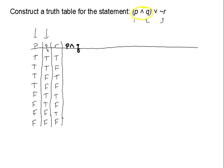So here we go. True and true gives me true. True and true gives me true. True and false is false. True and false is false. False and true is false — remember the conjunction needs both to be true in order to be true. And these last two have both false, false. So there is my P and Q column.